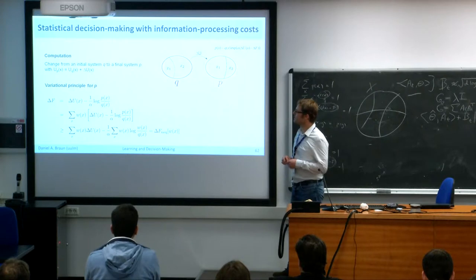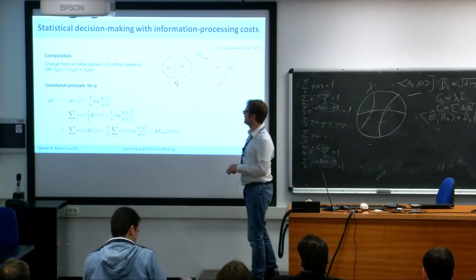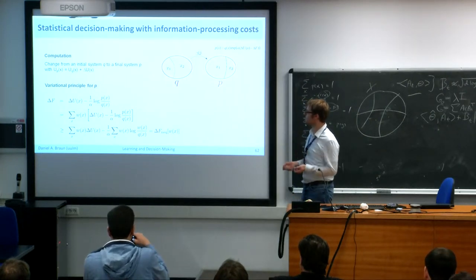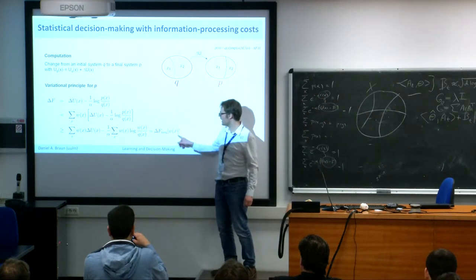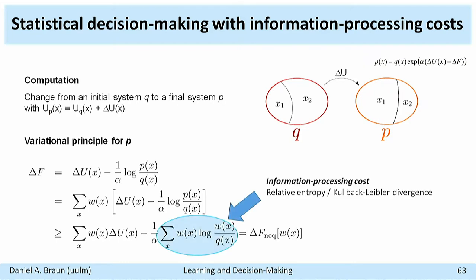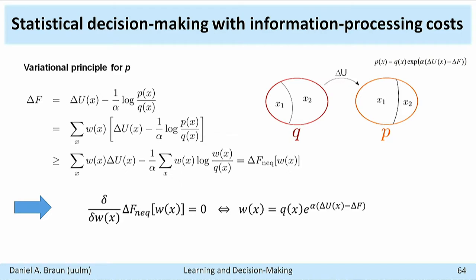We've created a variational principle to find the equilibrium distribution. We can try out all probability distributions w, and the best one is P. This is the relative entropy — the KL divergence between w and q — that we mentioned before, now returned as promised. This is saying the same thing in different writing: a variational principle where trying all different probabilities reveals the best one.